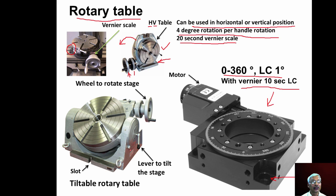A manually driven rotary table, called an HV rotary table (H for horizontal, V for vertical), can be used in horizontal or vertical positions. It is mounted on the machine tool table using T-bolts, and a vernier is attached for precise rotary positioning. Tables are available with 4 degrees rotation per handle rotation and a 20-second vernier scale. A wheel operates the table rotation, and the table has T-slots for mounting workpieces. Tilting is possible using a lever, with a vernier scale for precise tilted positions.